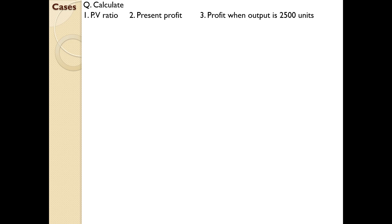Next, let us try another case: PV ratio, present profit, profit when output is 2,500 units, and number of units to be sold to obtain a profit of 10,000. Now the figures are given in units rather than sales amounts. Whenever units are asked, there is a slight change in the equation — we will deal with that.